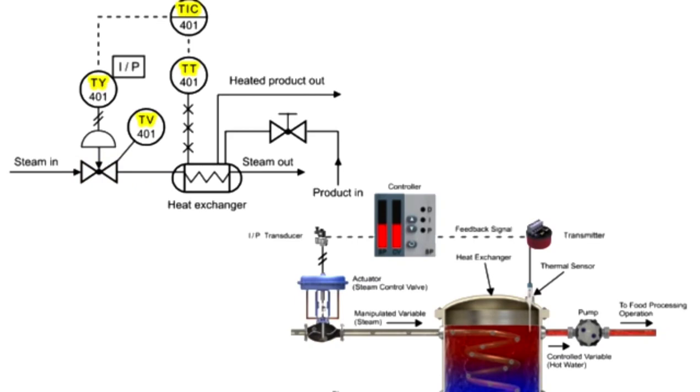In the top portion of the symbols is the functional identifier and the first letter denotes the measured variable. The first letter of each functional identifier is the letter T, which defines the process of temperature control.